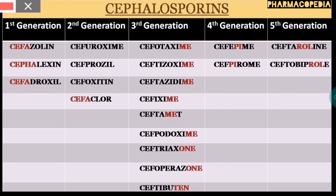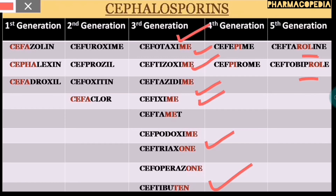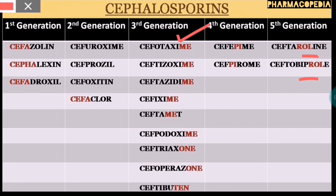The fifth generation cephalosporins contain the term 'role', so any cephalosporin which contains 'role' belongs to the fifth generation. Talking about the third generation, you have to remember the term 'xim' and 'one'. The third generation includes cefotaxime, ceftizoxime, ceftazidime, cefixime, cefditoren, cefpodoxime, ceftriaxone, cefoperazone, and ceftibutin. The exception is cefuroxime, because although it contains 'xim', it belongs to the second generation.